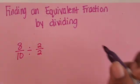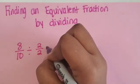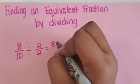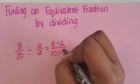Do the same thing as if when you were multiplying. 2/2. 8 divided by 2, let's write it out. 8 divided by 2 will be our new numerator and 10 divided by 2 will be our new denominator.